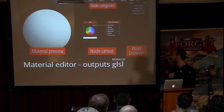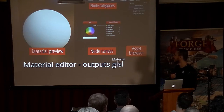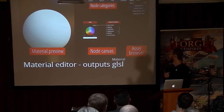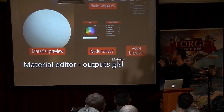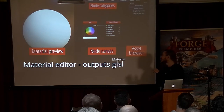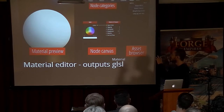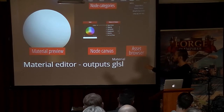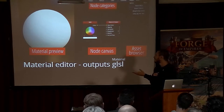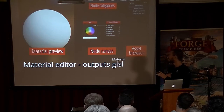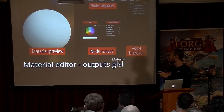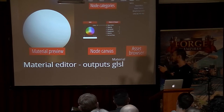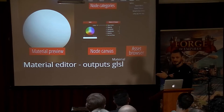Next up is a material editor where you basically assemble shaders using nodes. As soon as you change a connection, you can see the live preview in the viewport. Then you can either bake textures or get a raw GLSL output from it.